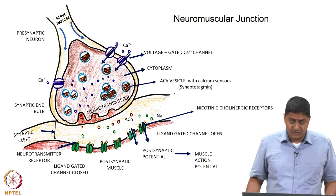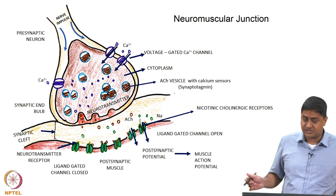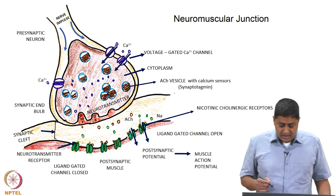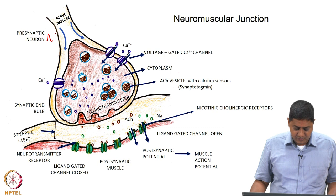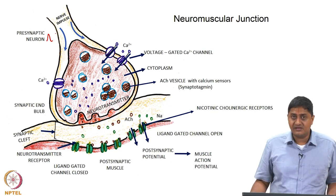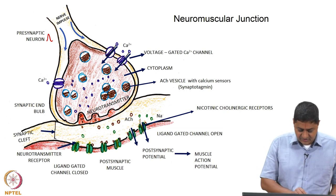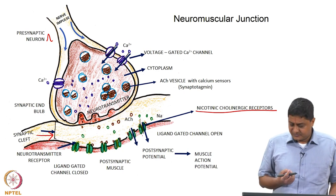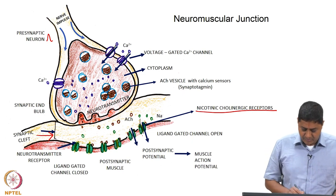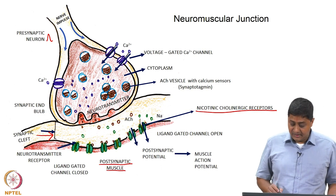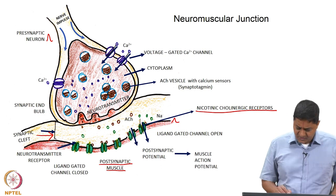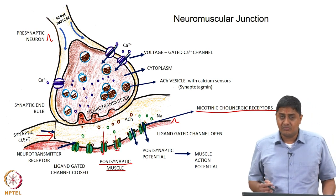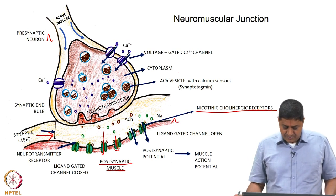At the neuromuscular junction, an action potential arriving at the synaptic end bulb of the presynaptic neuron opens voltage-gated calcium channels, causing vesicles to fuse to the membrane and exocytose acetylcholine. Acetylcholine released into the synaptic cleft attaches to nicotinic cholinergic receptors, allowing a large amount of sodium to enter the muscle cell, producing an action potential on the muscle side.